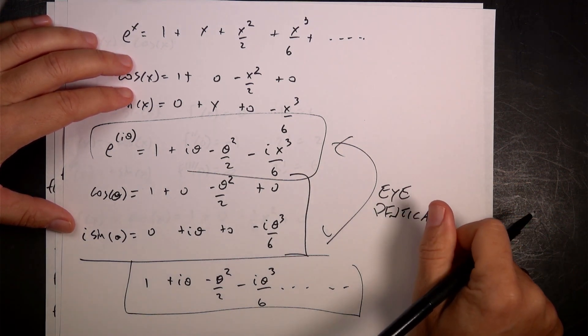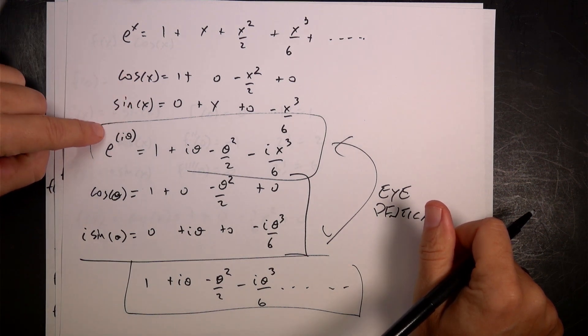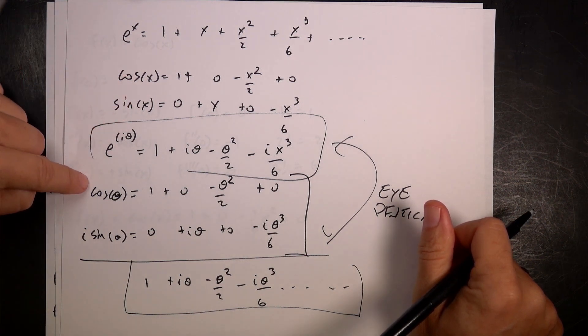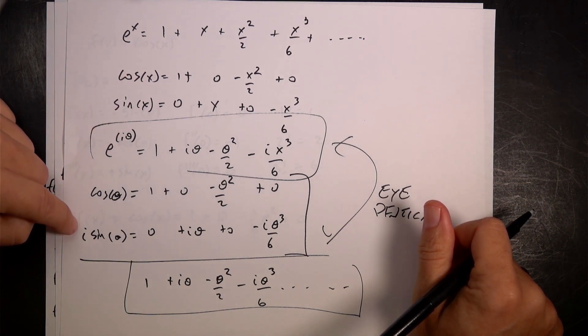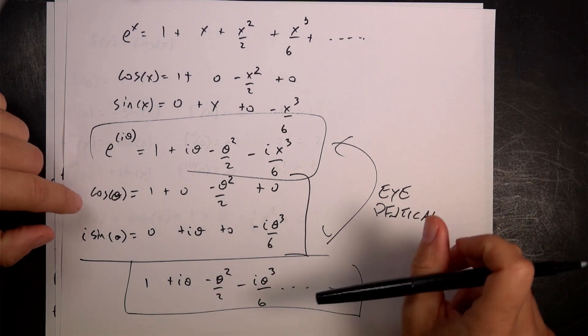Same thing. So e to the i·theta equals cosine theta plus i·sine theta. The end.